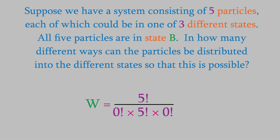There are no particles in states A or C, so both of those contribute zero factorial to the denominator. It turns out that, by definition, zero factorial is equal to one. So this fraction is just equal to five factorial over five factorial, which is equal to one.